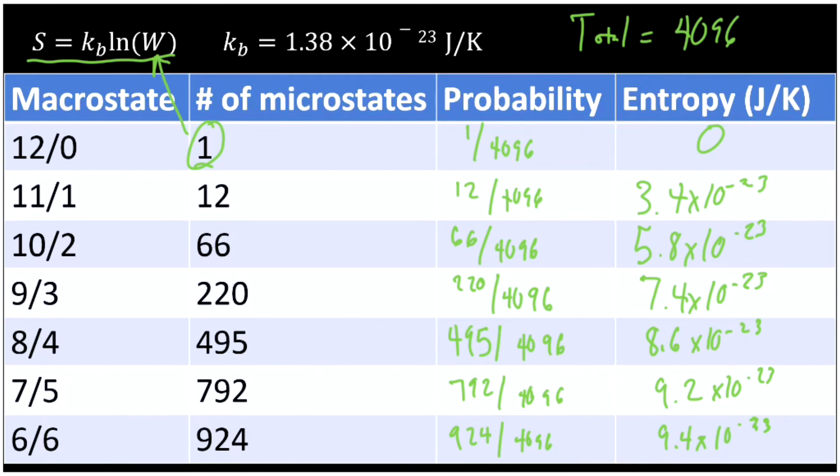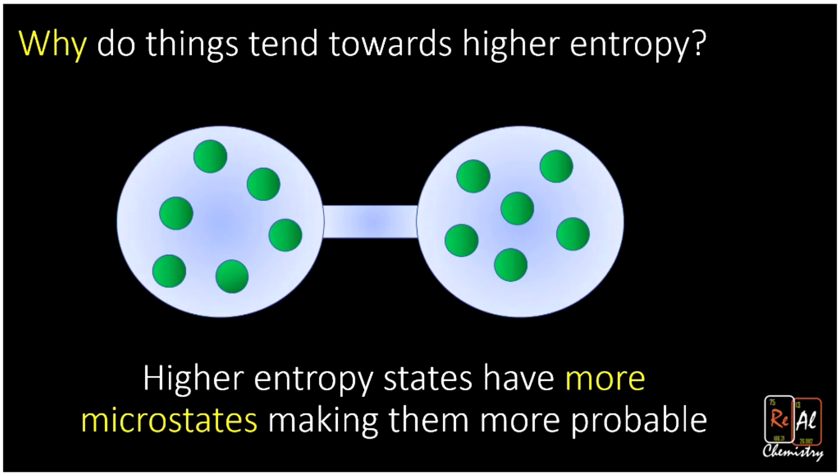So you can see that the most likely state is the highest entropy. So why does our system progress towards the higher entropy state? Well, it's simply because it's more probable. The system with the most number of microstates is the state we're most likely to find it in. So why do things tend towards higher entropy? Higher entropy states have more microstates, making them more probable.